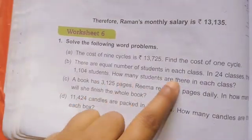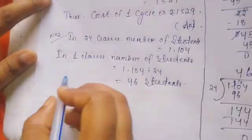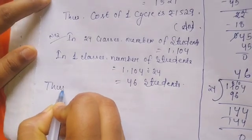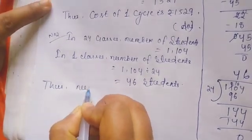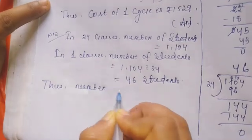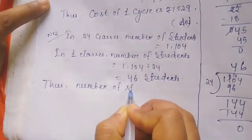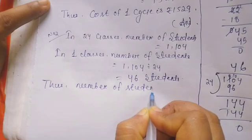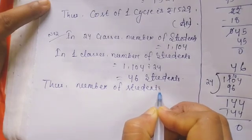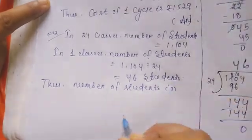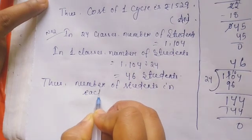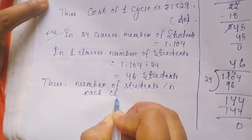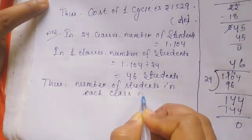How many students are there in each class? Thus, the number of students in each class is 46.